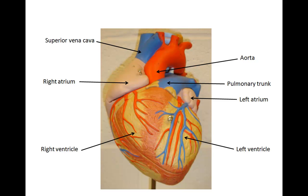Two major arteries through which blood passes exiting the heart are the pulmonary trunk and the aorta. The aorta is red in color and the pulmonary trunk is blue in color, denoting that the aorta transports oxygenated blood and the pulmonary trunk transports deoxygenated blood.